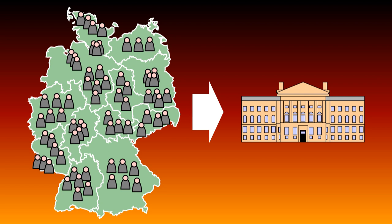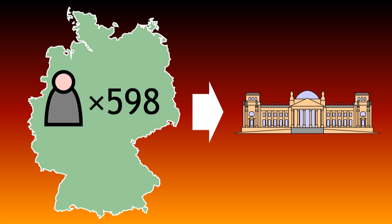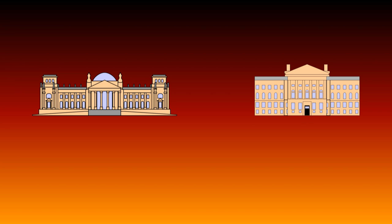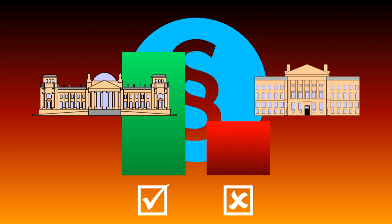The Bundestag, on the other hand, is made up of elected representatives, one from each constituency, plus a number of other representatives, which I'll explain later. Together, the Bundestag and the Bundesrat propose legislation, which is then debated and voted on. The Constitutional Court ensures that any legislation does not violate the German basic law.